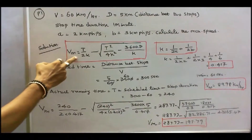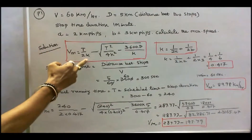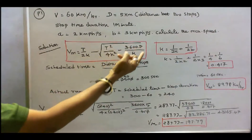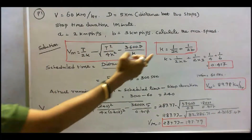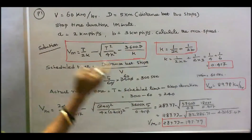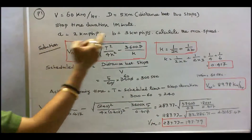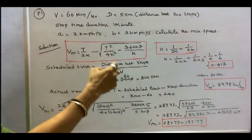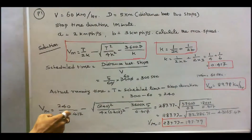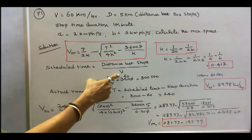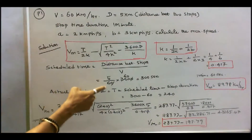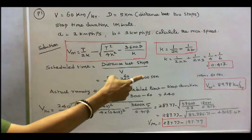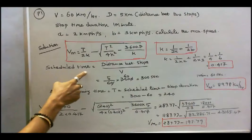The formula for maximum speed is: Vm = T/2K − √(T²/4K² − 3600D/K), where K = 1/2a + 1/2b, a is acceleration and b is retardation. Scheduled time = (distance / speed) × 3600 = (5/60) × 3600 = 300 seconds.